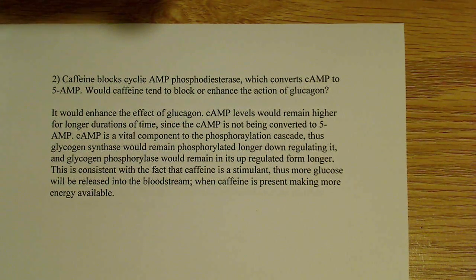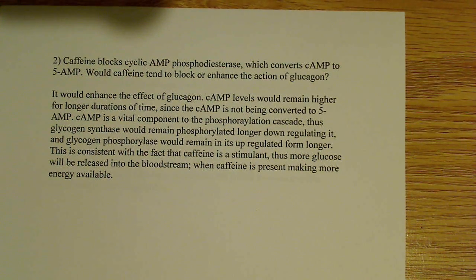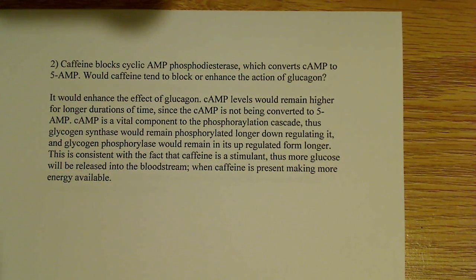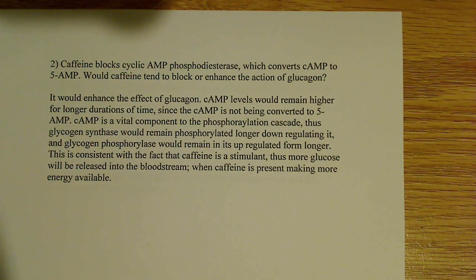Here's another interesting question — I love caffeine, and a lot of people in college or high school are probably living on caffeine at one point or another. Caffeine blocks AMP phosphodiesterase, and what AMP phosphodiesterase does is it converts cyclic AMP to what's known as 5' AMP. So the question is: would caffeine tend to block or enhance the action of glucagon? Remember, glucagon is a response to low blood glucose.